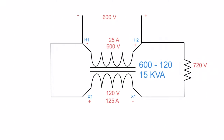We have 720 volts at the load. We need to determine the maximum current that can safely be delivered. We look for the winding in series with the load — that's the 125 amp low-side winding in series with the 720 volts across the load resistor. So maximum current is 125 amps. Voltage times current: 720 volts times 125 amps gives us 90 kVA.